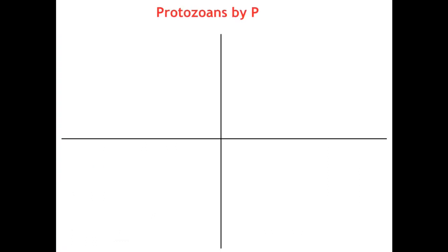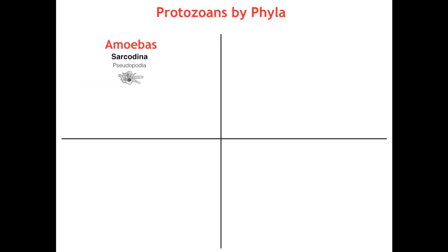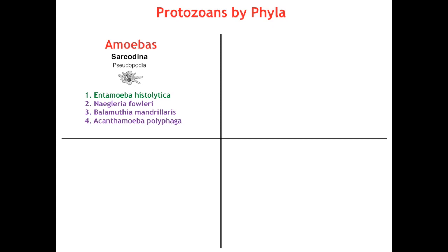For our protozoans by phyla, starting off with our amoebas, a.k.a. sarcodina, who move via pseudopodia. There are four that we need to know: the first is Entamoeba histolytica, next Naegleria fowleri, third is Balamuthia mandrillaris, and fourth Acanthamoeba polyphaga.